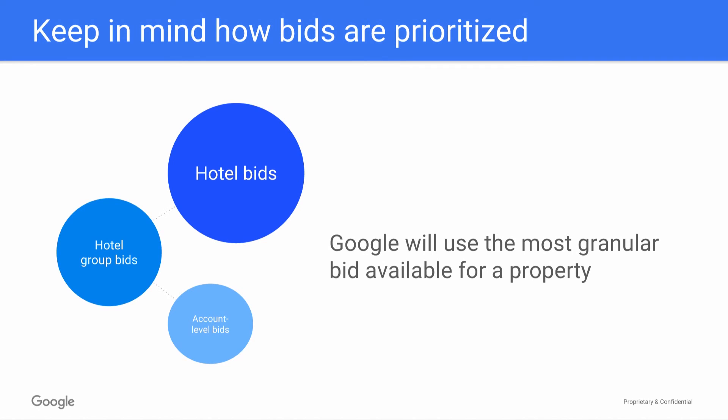It's worth reiterating that Google will use the most specific bid available for a hotel. In other words, when you set hotel group bids, they override the account level defaults for those hotel groups, and similarly, when you set bids on individual properties, those individual property bids override any bid on the property's hotel group.